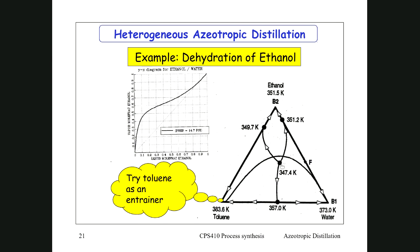This is a low-boiling azeotrope — an unstable node where arrows move away from it — and water is the stable node. That is one distillation boundary. There are three distillation regions in total. We need to get into a different region because we cannot get to pure ethanol using only a liquid-liquid separation; that can only give us an organic phase and an aqueous phase.